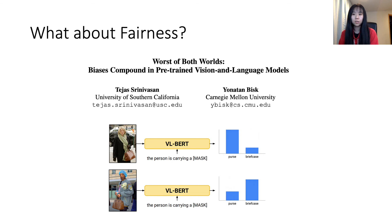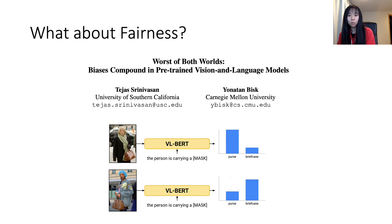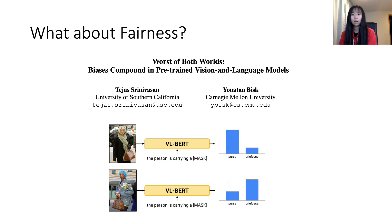After covering adversarial robustness, what about fairness? An initial attempt is made in the work 'Worst of Both Worlds.' The authors found that VLP models are severely biased — for example, VLP models tend to think women carry purses and men carry briefcases. As the title suggests, the bias in VLP models may come from biases that exist in data or models from both NLP and computer vision.